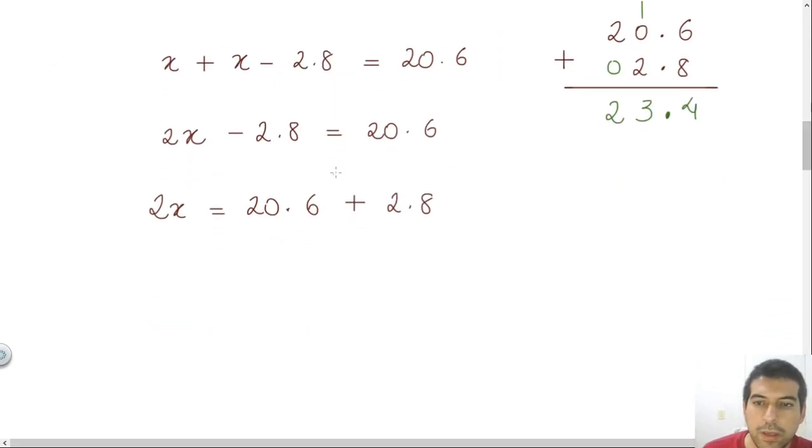23.4 is the sum of those two. So we have 2x being equal to 23.4. We need to leave the variable x alone. In order to do that, I need to send this 2 to the right side of the equation. This 2 will do the opposite.